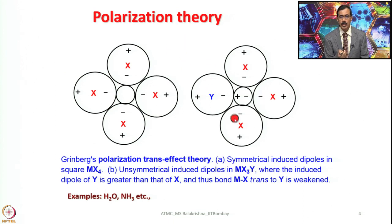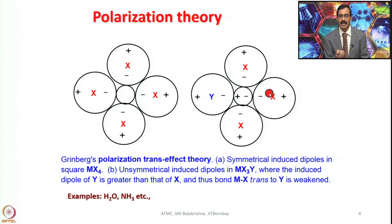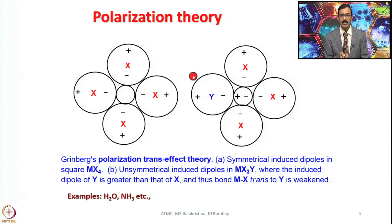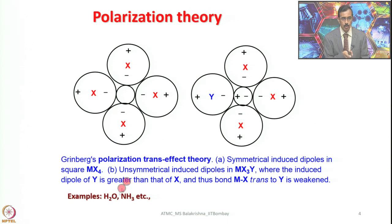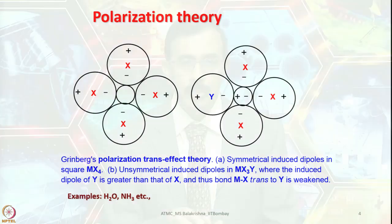In complex MX3Y, where the induced dipole of y is greater than that of x, this arrangement causes the bond trans to y to be stabilized while the bond trans to itself is weakened — making it ready for departure. Once this departing ligand leaves, the entering ligand comes in and the substitution reaction is complete. This polarization theory holds good for neutral ligands such as ammonia and water, which are neutral sigma donor ligands.